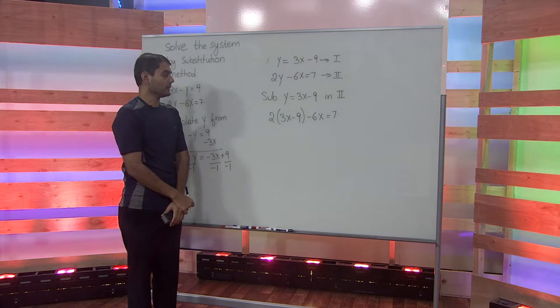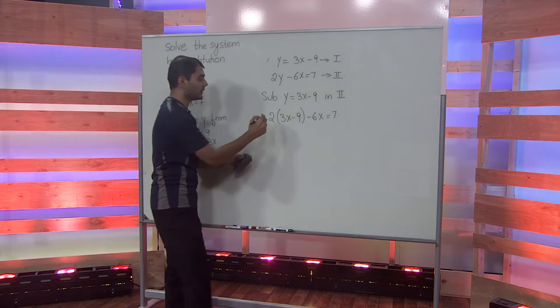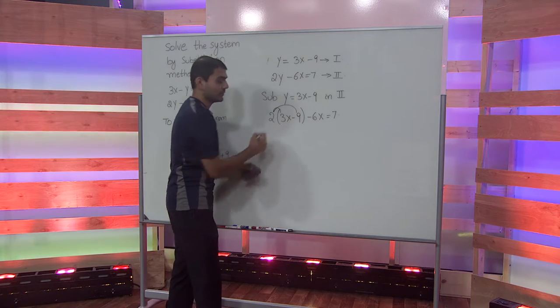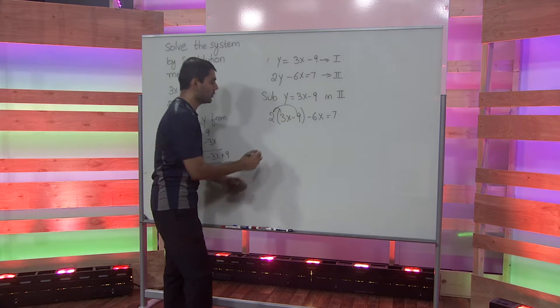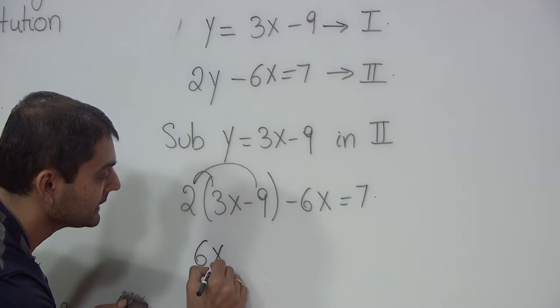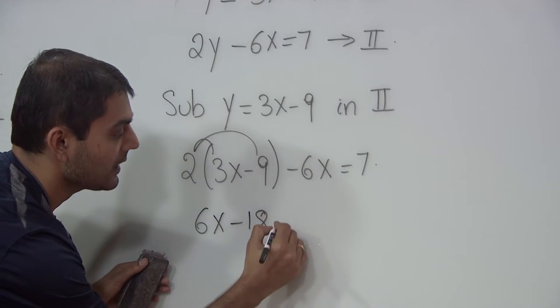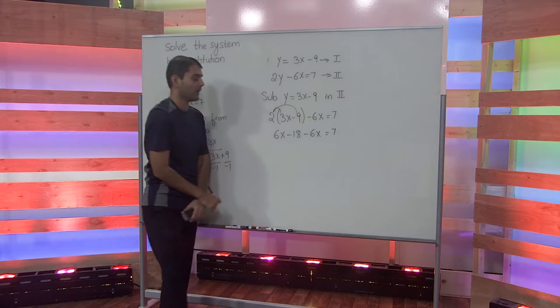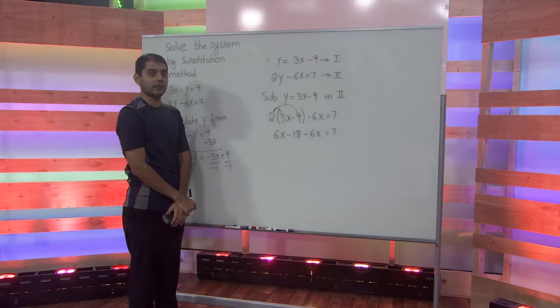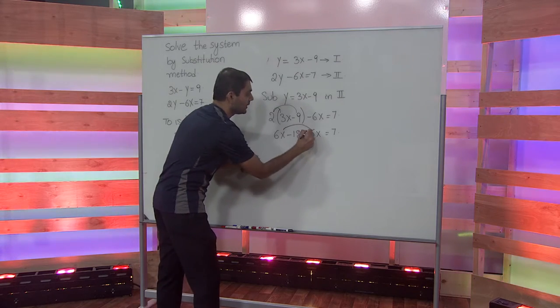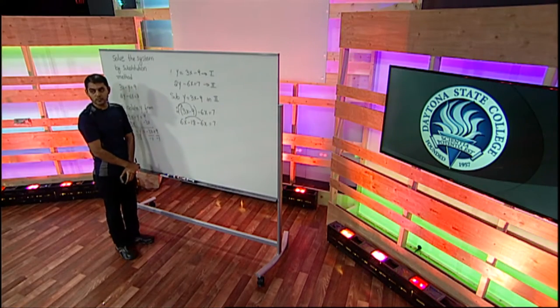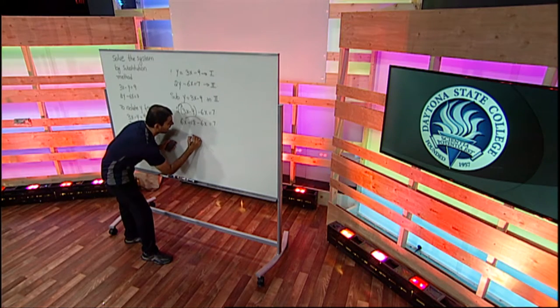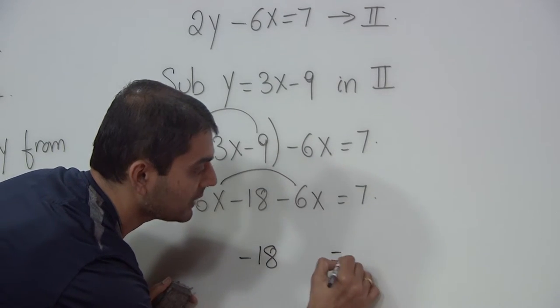First, let's clear the parentheses by distributing the 2 to each of the terms. Distributing the 2, we get 6x minus 18 minus 6x equals 7. On the left-hand side of this equation, let's combine the variables. Combining these two variables, we get negative 18 equals 7.